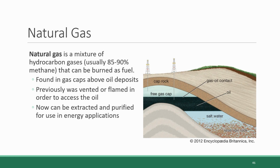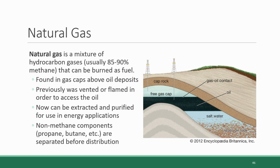During the purification, the non-methane components of the mixture — which can include gases like propane, butane, other hydrocarbons, as well as non-hydrocarbon contaminants — are separated out from the methane, such that the gas that ends up getting distributed for use is just pure methane.